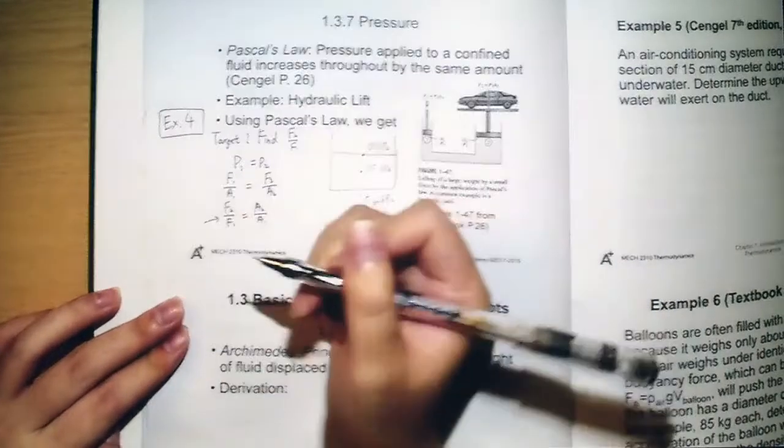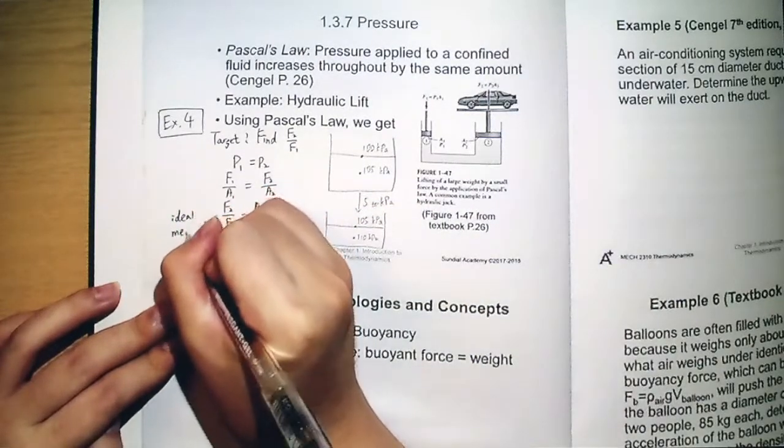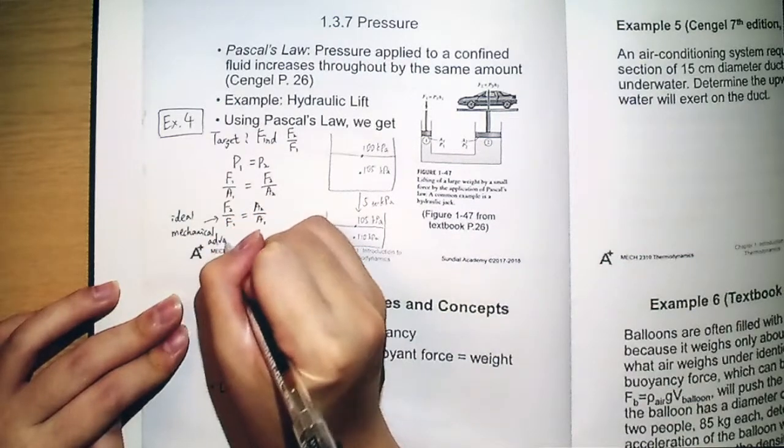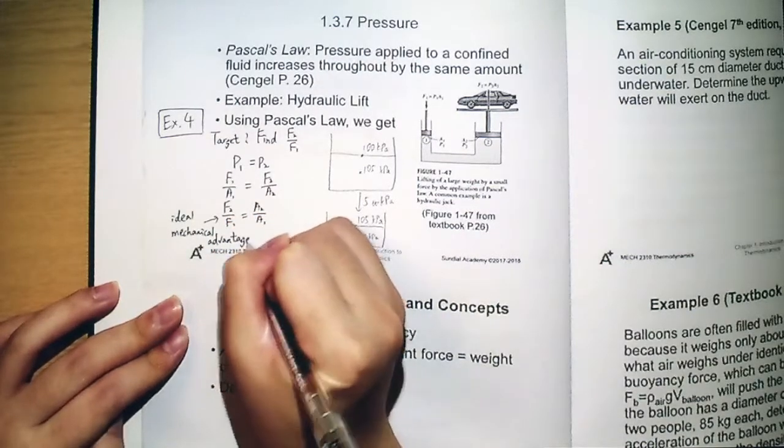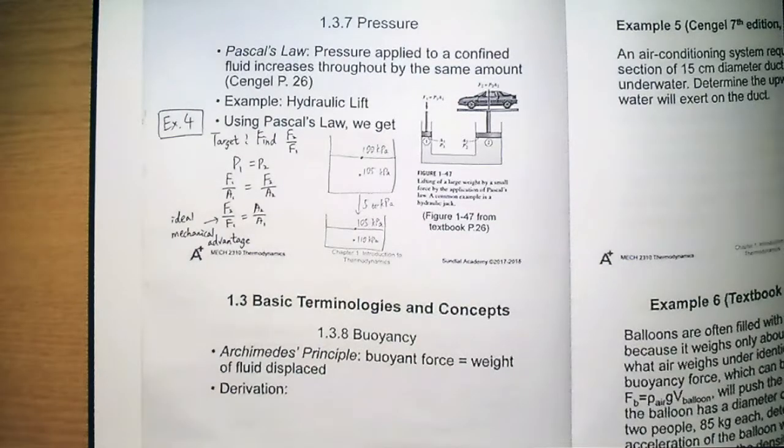So this ratio, we have a name for that, that would be ideal mechanical advantage. This is called ideal mechanical advantage, which is the ratio between the force output to the force input.